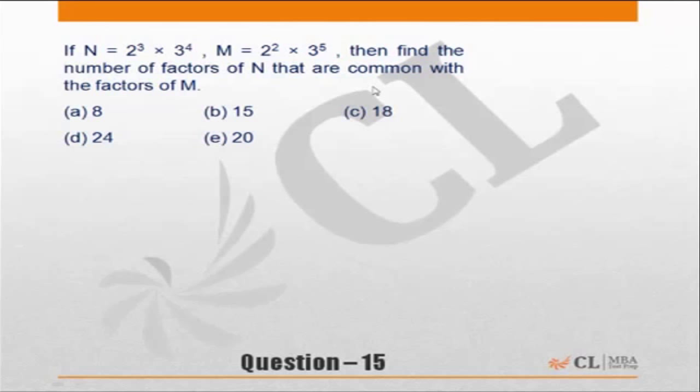N is 2 cube into 3 to power 4. M is 2 square into 3 to power 5. Then find the number of factors of N that are common with factors of M.